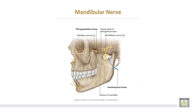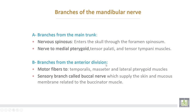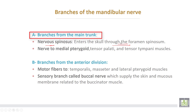This is the mandibular nerve, the third terminal branch of the trigeminal nerve, the fifth cranial nerve. This is the lingual branch and inferior alveolar branch. Branches arising first from the main trunk: number one, nervus spinosus, which enters the skull through the foramen spinosum; and the nerve to the medial pterygoid muscle, tensor palatae, and tensor tympanae muscles.